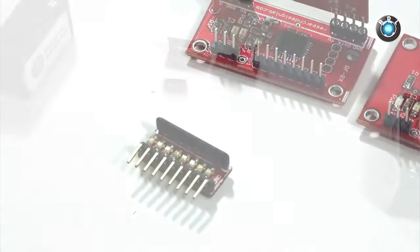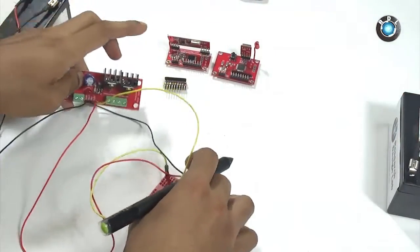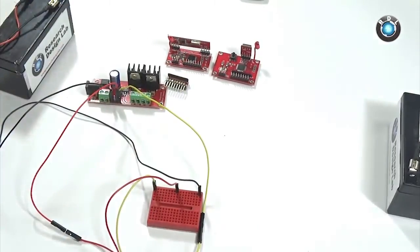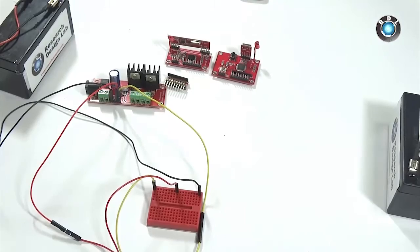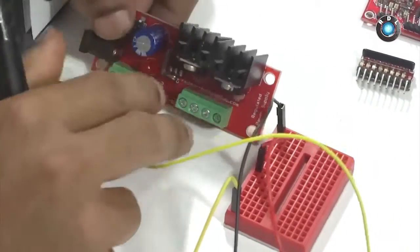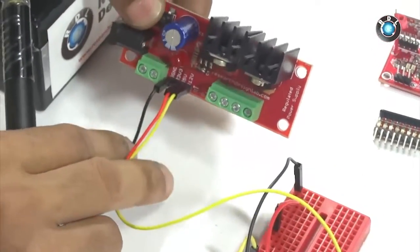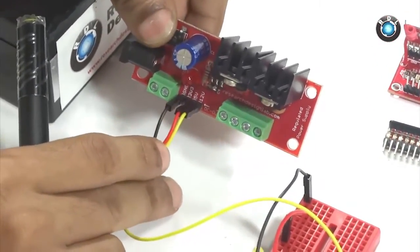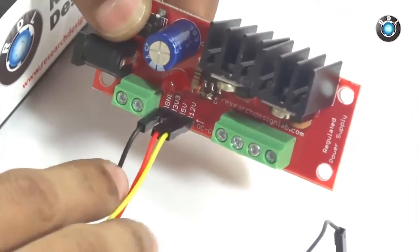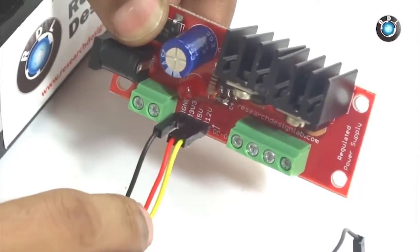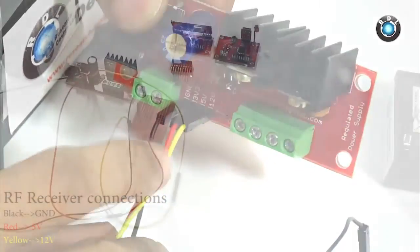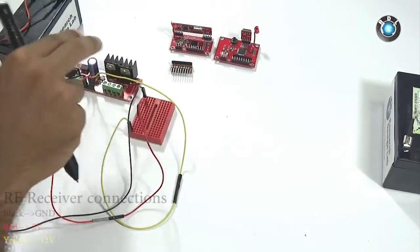Now let us make the power connections for this RF receiver board. Here, I have used a regulated power supply board along with this mini breadboard. This power supply board here has basically 3 voltage levels, 3.3V, 5V and 12V. Since this is a receiver module, I am interested only in 5V. The black wire here is for ground, the red goes to plus 5V and the yellow is for 12V which we will not use it for now.